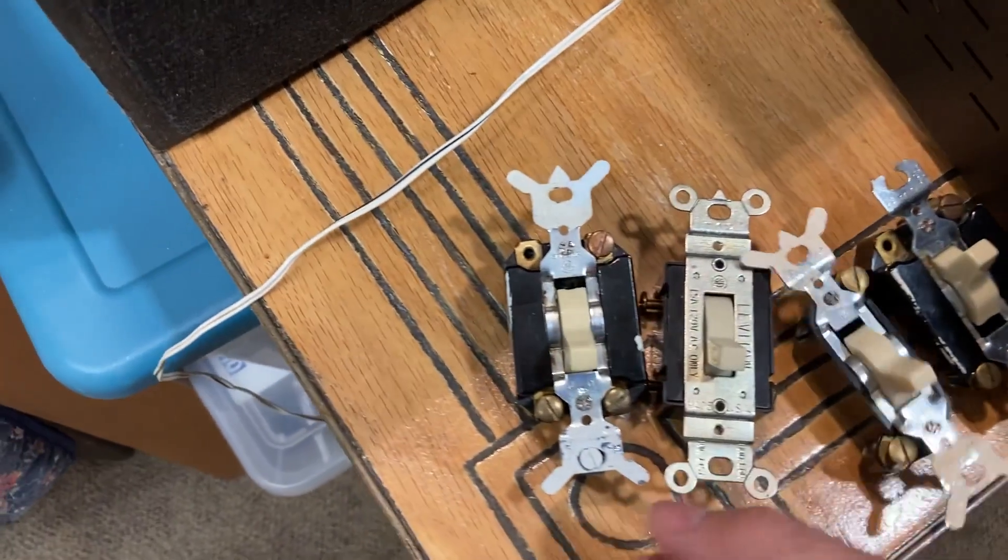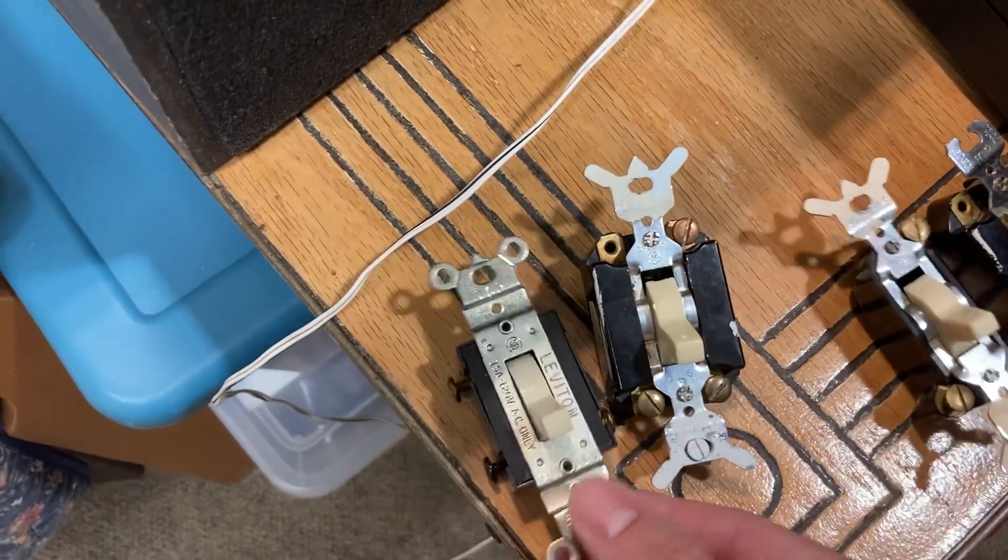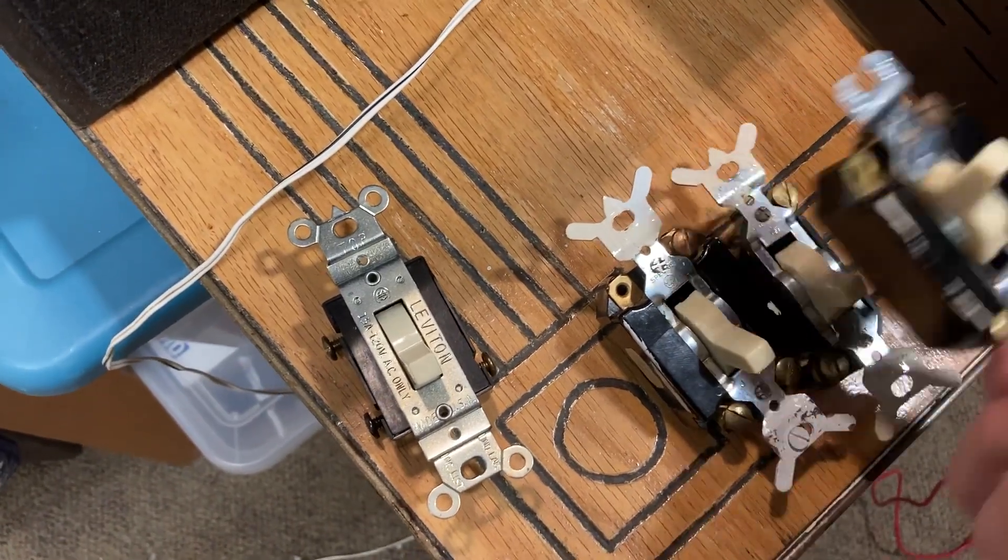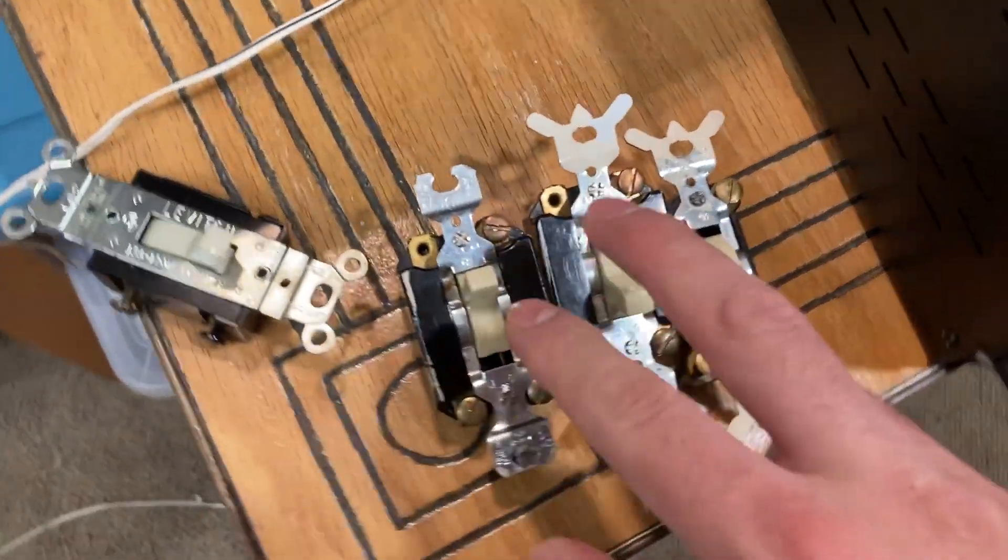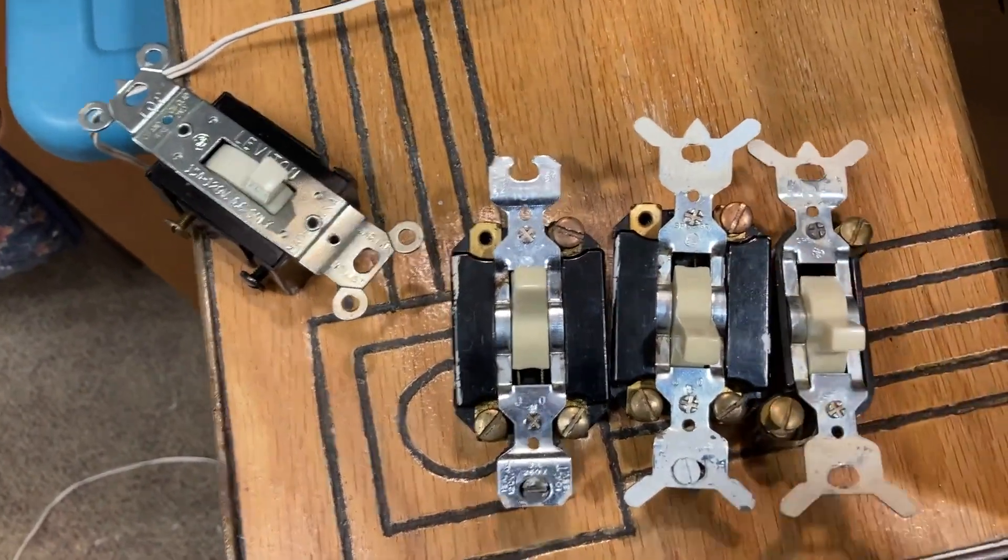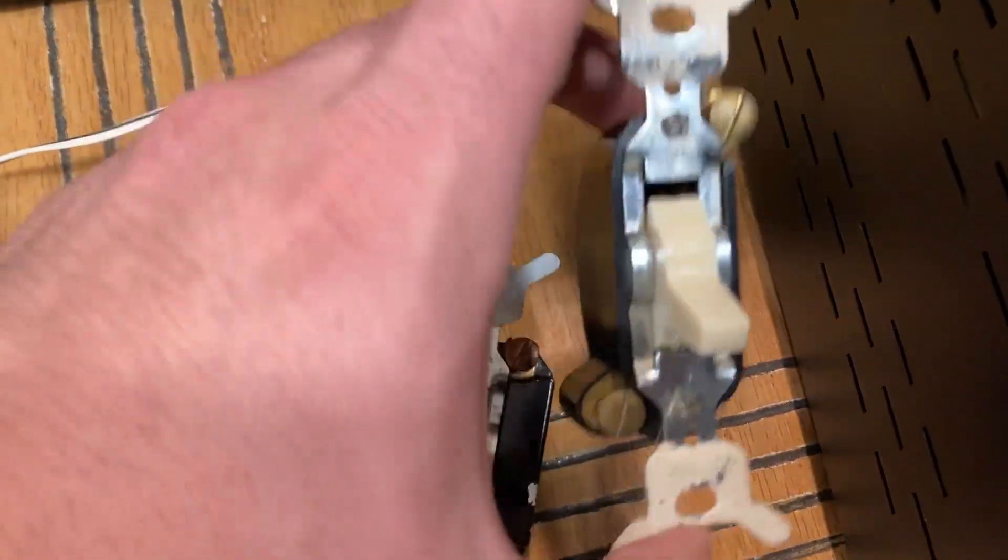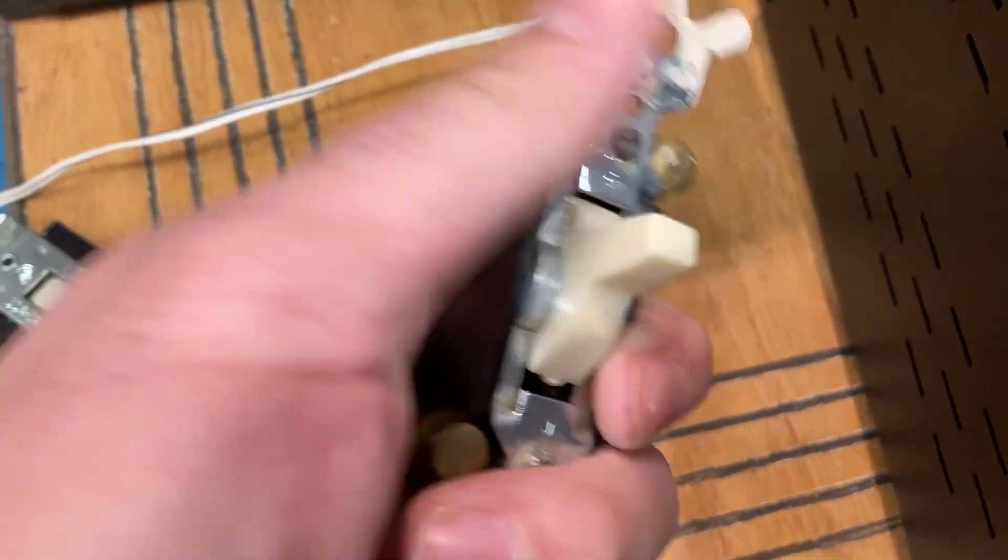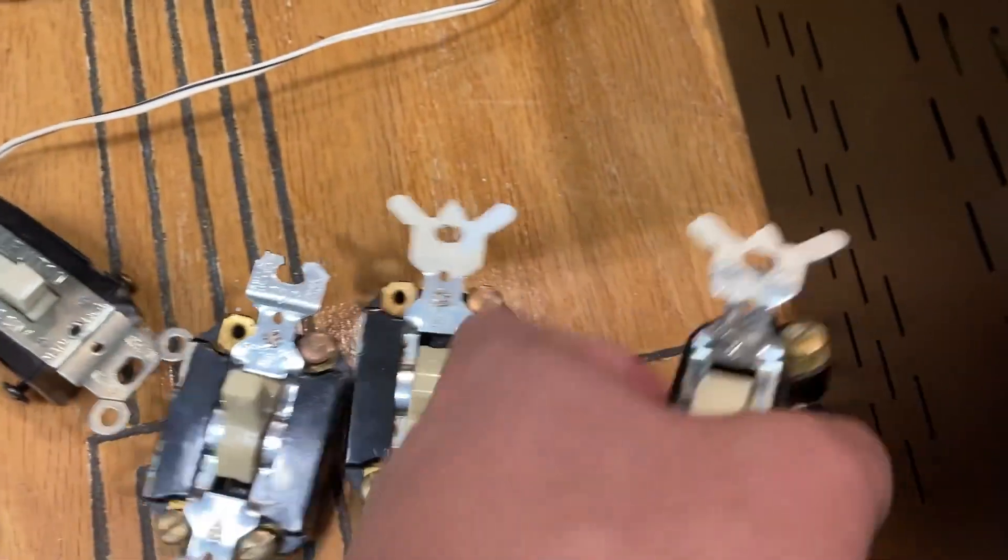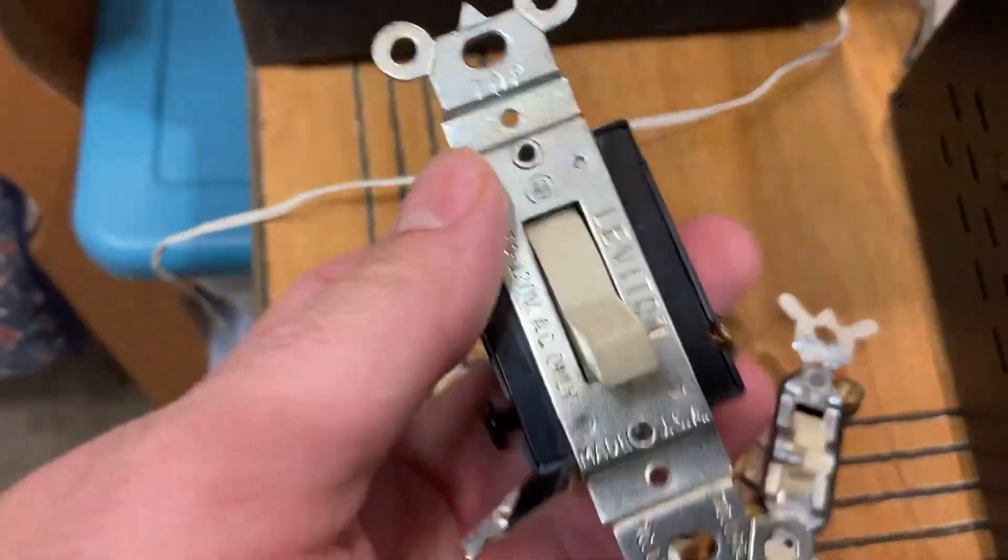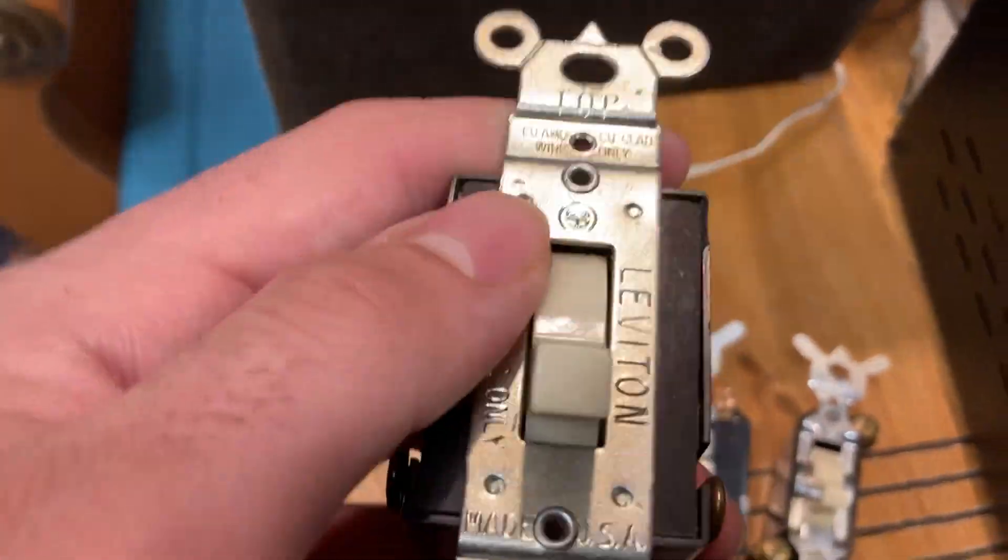I have here three GE mercury light switches. Two of them are three-way and then the other one is just a single pole, this regular old one-way switch made by GE. And the other one is made by Leviton, or Leviton however you want to pronounce it.